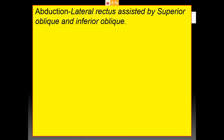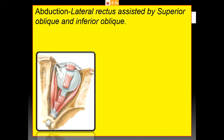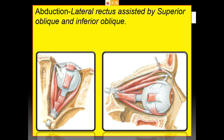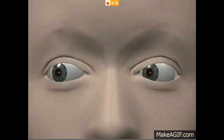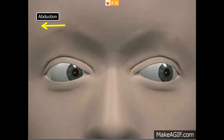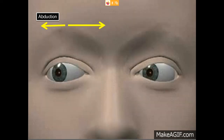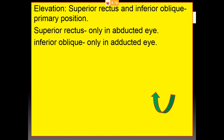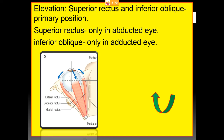Abduction is carried out by the lateral rectus, assisted by the superior oblique and the inferior oblique. When one eye is abducted, the other eye will be adducted — observe the right eye abducted while the left shows adduction.